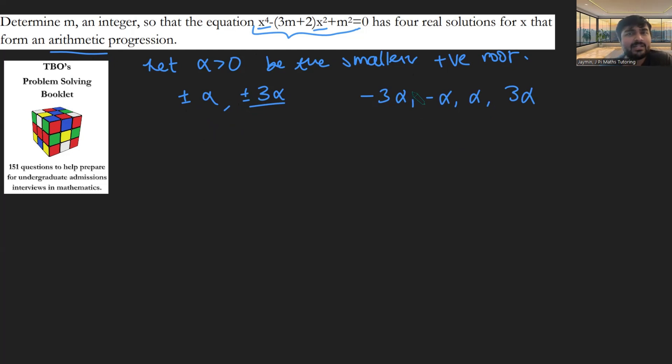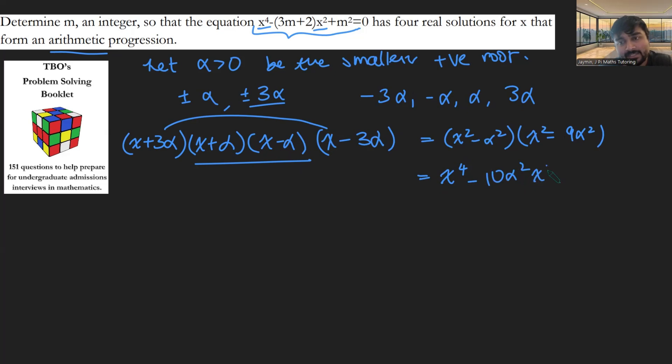Lovely. Now, of course, α I don't know yet. It's just some positive number, which I perhaps may want to work out. But it turns out that we don't actually need to. Now, how does this factorize? Well, this is going to factorize as (x + 3α)(x + α)(x - α)(x - 3α). And if I group those two terms together and those two terms together, that's (x^2 - α^2)(x^2 - 9α^2). And if I just expand this, this gives me x^4 - 10α^2x^2 + 9α^4.